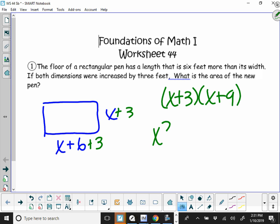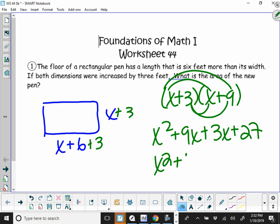When you work that out, x times x is x squared plus 9x plus 3x plus 27, which is x squared plus 12x plus 27.